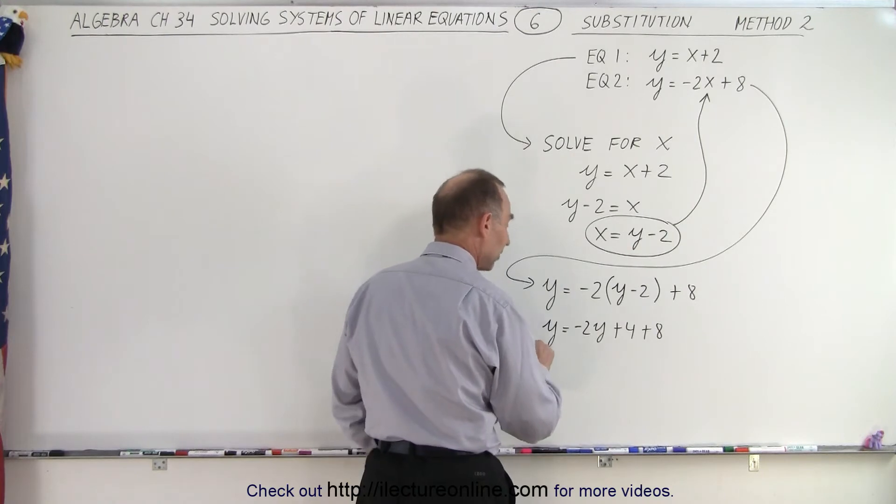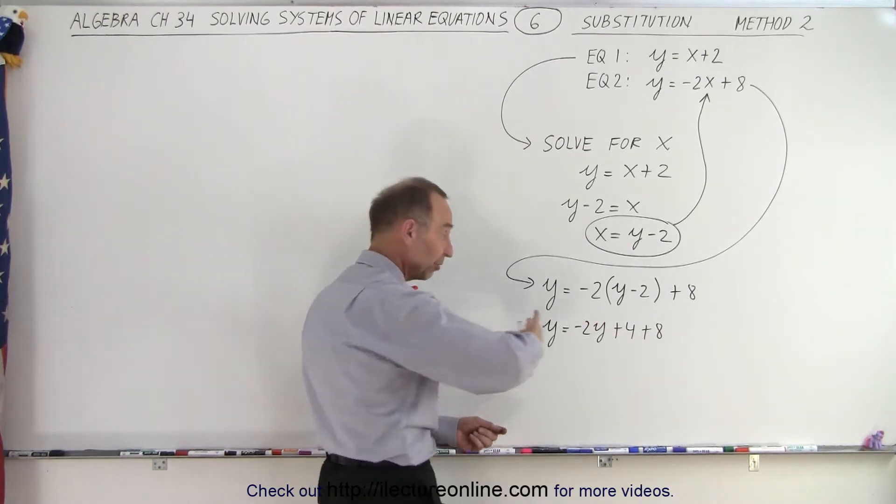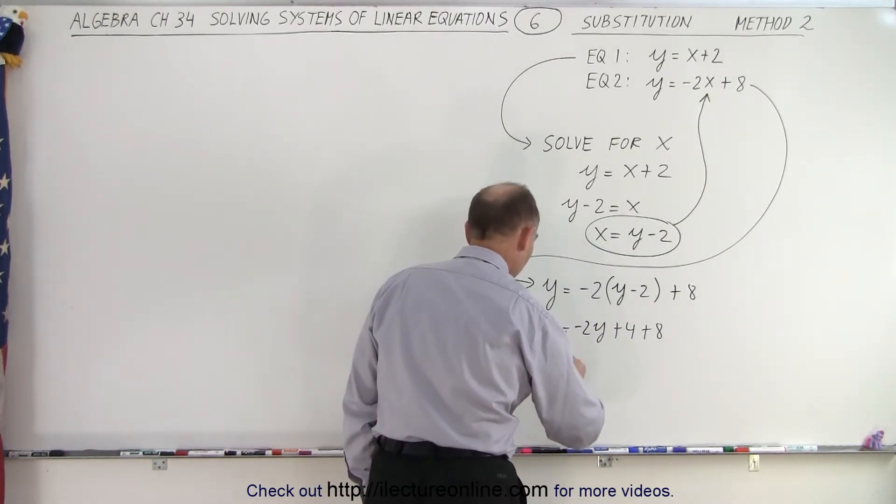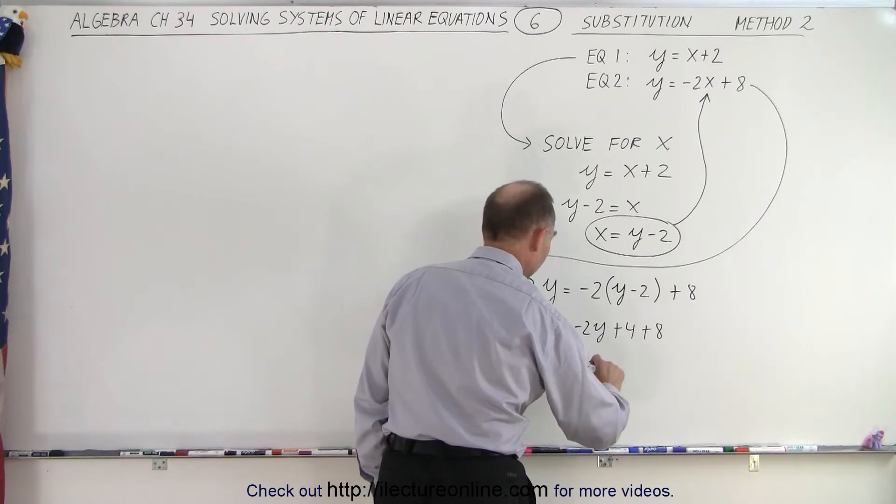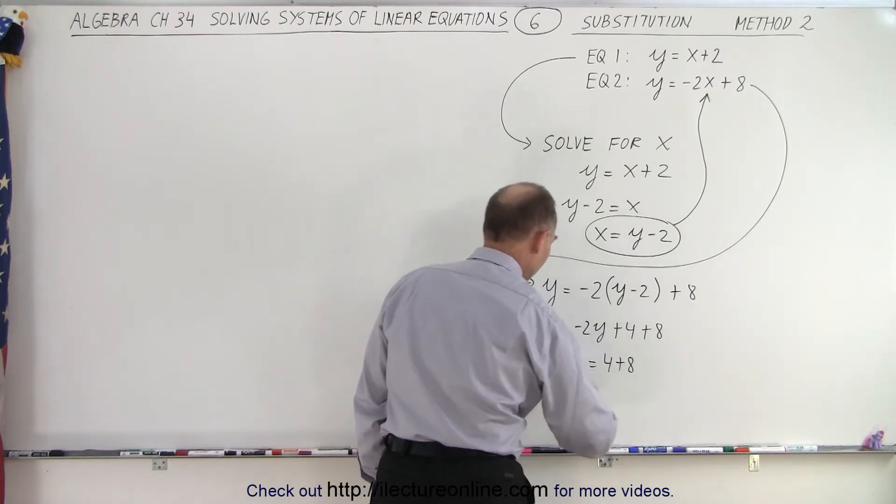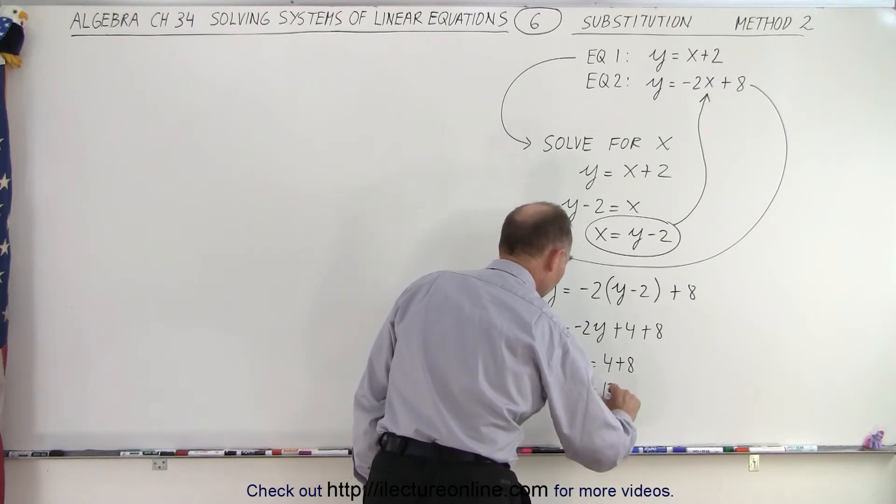The minus 2y then moves to the other side because now we want to separate the variables from the numbers. So we get y plus 2y is equal to 4 plus 8, and this gives us 3y is equal to 12.